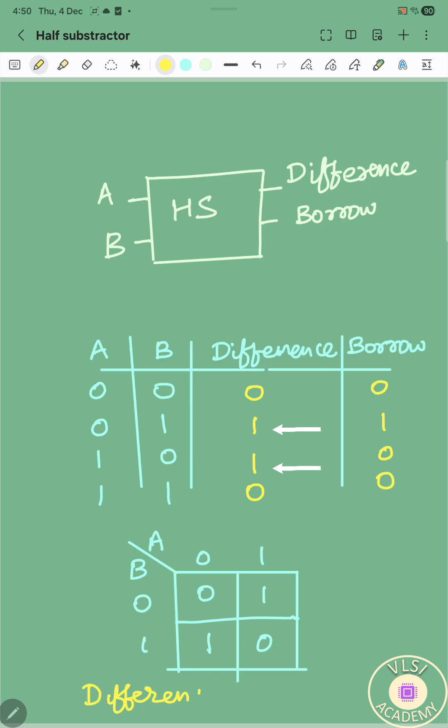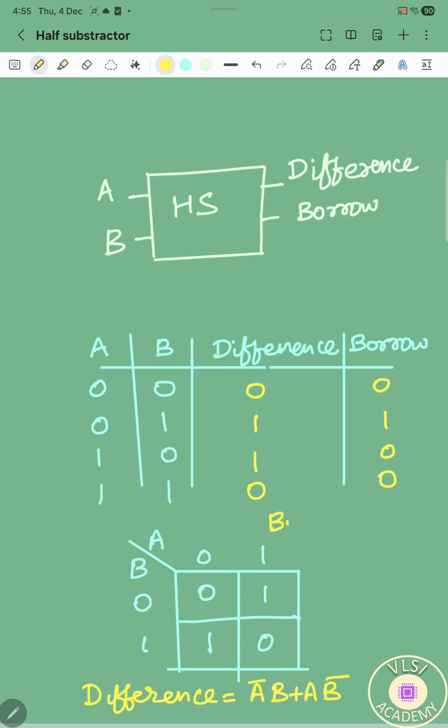Hence, the difference output can be stated in terms of input as A bar B plus A B bar. And borrow output can be represented as A bar B since borrow output is high only when A is 0 and B is 1.